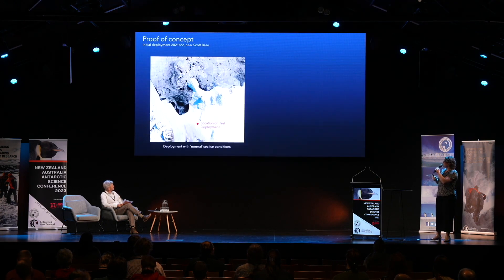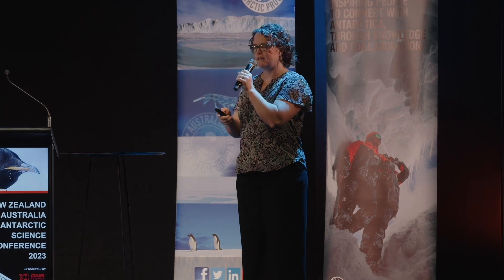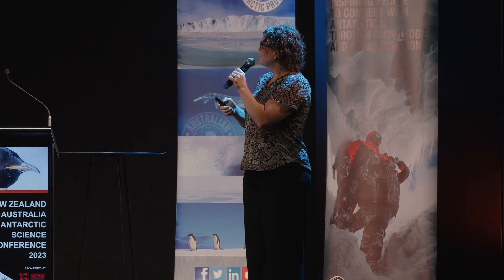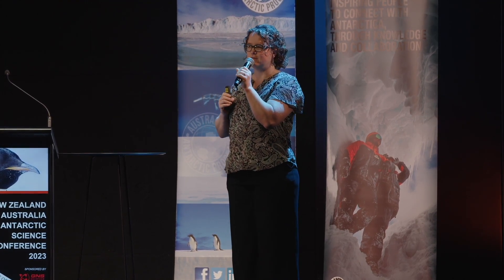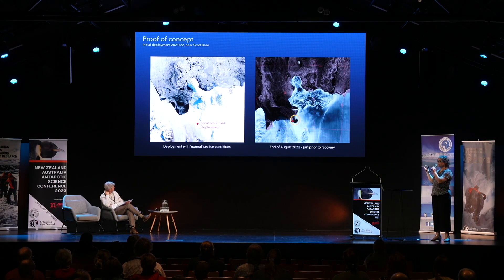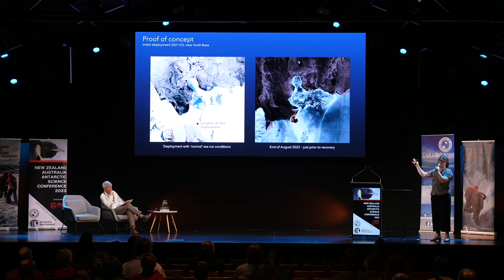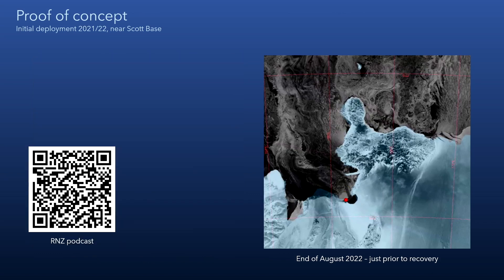As a proof of concept, we deployed this array in October 2021 under what we might consider normal sea ice conditions. However, as we watched the growth of sea ice over the following season, it turned out to be quite an unusual season. This is an image of McMurdo Sound in late August — I've circled in yellow the only section of fast ice available. Basically all of McMurdo Sound is full of open water, which is extremely unusual for this time of year.